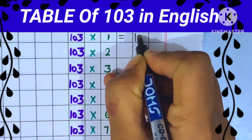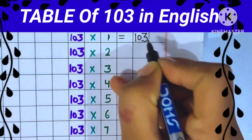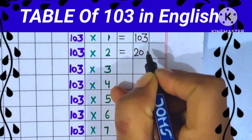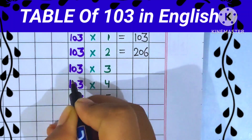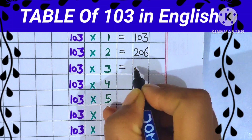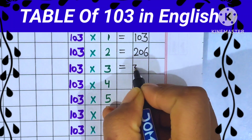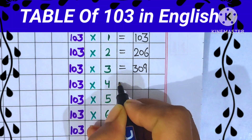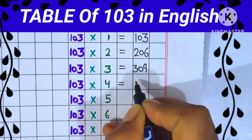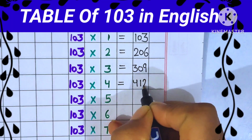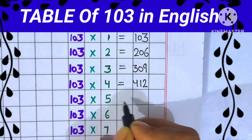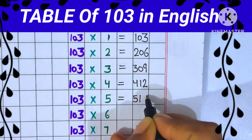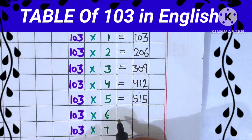103 ones are 103. 103 twos are 206. 103 threes are 309. 103 fours are 412. 103 fives are 515.